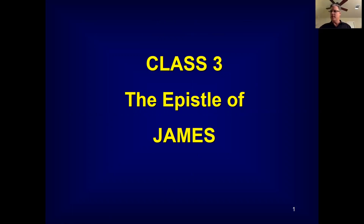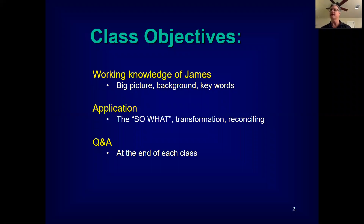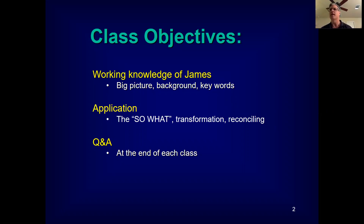Just a reminder of our class objectives for studying the book of James: to gain a working knowledge of the book, look at the big picture, see some background information, identify key words, key phrases, and key concepts. The application — what I call the 'so what' — is to locate and uncover how we can apply what we gain from scripture to cause us to be transformed in the way God wants. I'll leave some time at the end for questions, so jot them down on your handouts.